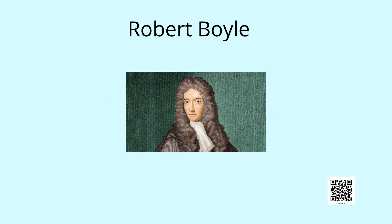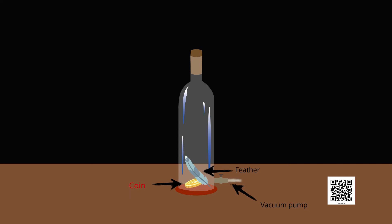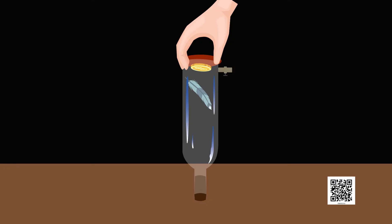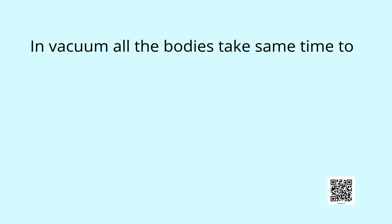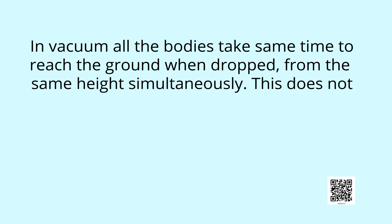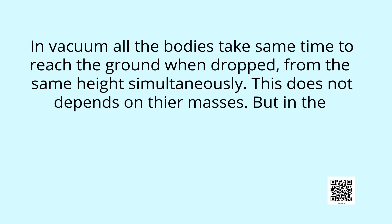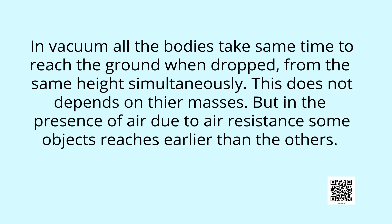Then why do the stone and the cotton ball reach the ground at different times? Galileo explained that lighter objects feel greater frictional force due to air than heavier objects. This was proved in an experiment conducted by Robert Boyle. He dropped a coin and a feather in a jar whose air was removed using a vacuum pump. He found that both the coin and the feather reached the bottom of the jar at the same time. So it was proved that in vacuum, all bodies take the same time to reach the ground when dropped from the same height simultaneously, regardless of their masses.